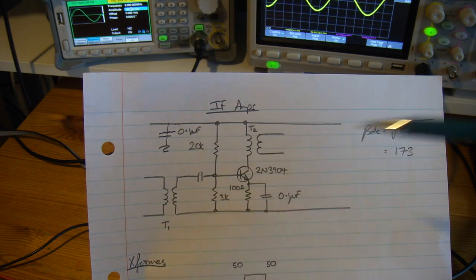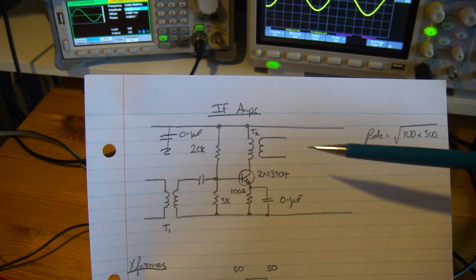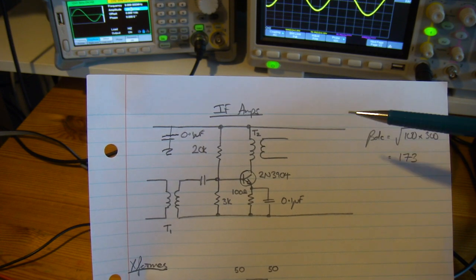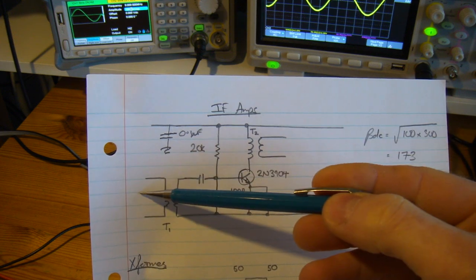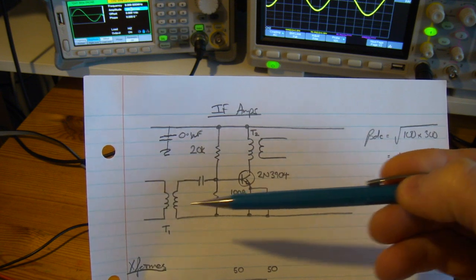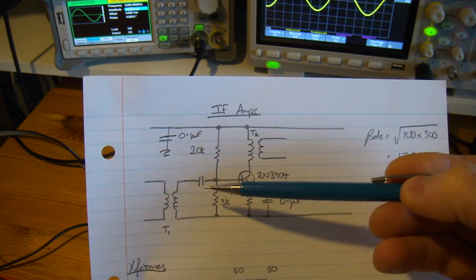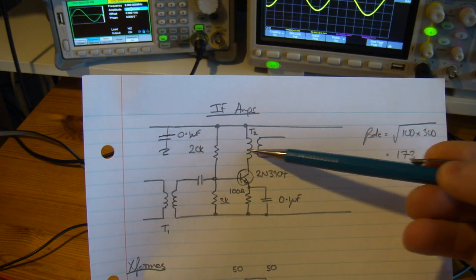Once I've built this up, what I need to do before working out what the coupling transformers are is determine the impedance. I'm only looking at the resistive side—the input impedance and also the output impedance.